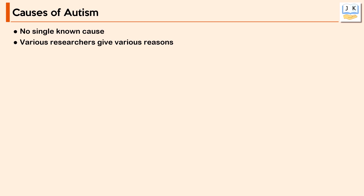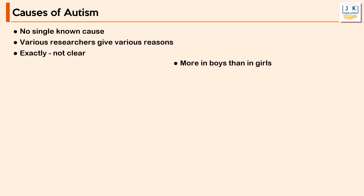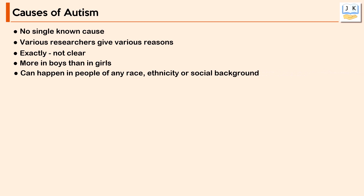There is no single known cause of autism. Various researchers give various reasons for the occurrence of the condition, and exactly why autism happens is not clear. Autism is four times more common in boys than in girls and can happen in people of any race or ethnicity. Family income, lifestyle, or educational level does not affect a child's risk of autism.